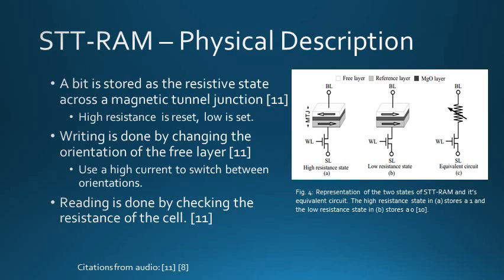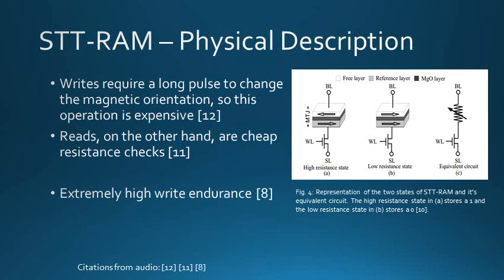STT-RAM's physical properties are somewhat less intuitive than PC-RAM's. The bit is stored as a resistance value; however, this resistance value is the result of the orientation of a magnetic tunnel junction, as opposed to the physical state of a material. The MTJ consists of two magnetic layers: a reference layer and a free layer. When the orientations of these layers are anti-parallel, the resistance of the MTJ is very high, storing a 1. When the orientations are parallel, the resistance is low, storing a 0. To write to the bit, a high current is used to change the orientation of the free layer. Similar to PC-RAM, a read just checks the resistance of the cell. STT-RAM has relatively high write energy, mostly because a long pulse is needed to flip the orientation of the free layer, which also slows down the write speed. Unlike PC-RAM, however, STT-RAM has extremely high write endurance, due to the non-damaging nature of a magnetic orientation flip.